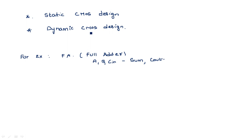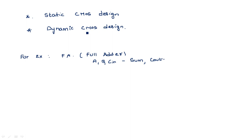Any type of logical circuit implemented in CMOS design can be described as static or dynamic depending on the type of input. If any logical circuit implemented in CMOS design has a constant or consistent input — until we intentionally change it — then that is known as a static input, and it falls under static CMOS design.